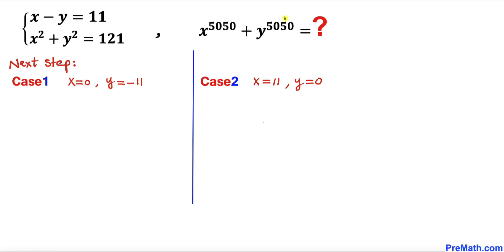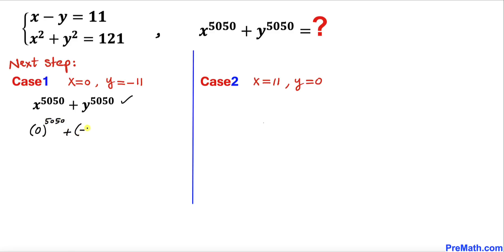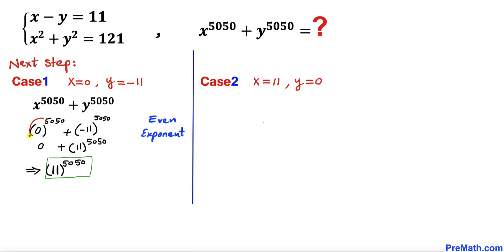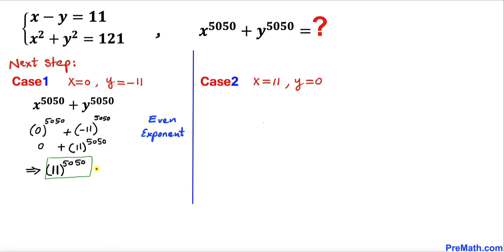Now let's find the value of x to the power 5050 plus y to the power 5050 for case 1. Plugging in x equals 0 and y equals negative 11 gives 0 to the power 5050 plus negative 11 to the power 5050. Since 0 to the power 5050 is 0, and 5050 is an even exponent, this gives us 11 to the power 5050.